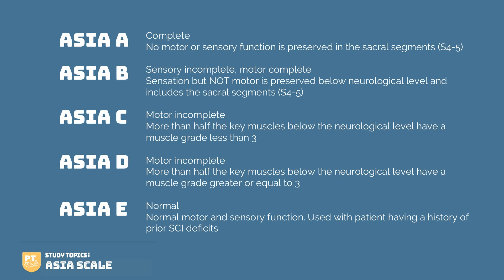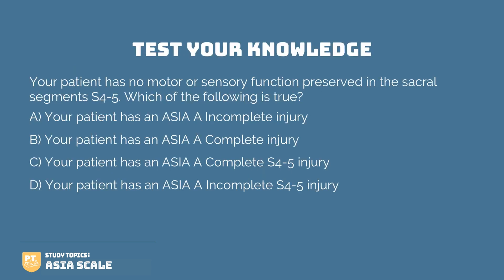Let's test your knowledge with a question. Your patient has no motor or sensory function preserved in the sacral segments S4 and S5. Which of the following is true? The answer is B. When your patient has no motor or sensory function, they will always be classified as ASIA A — a complete injury. ASIA A is the only level that is complete; all others are incomplete. There is not enough information in the question to determine the patient's level of function, so C and D are incorrect, leaving B as the correct answer.